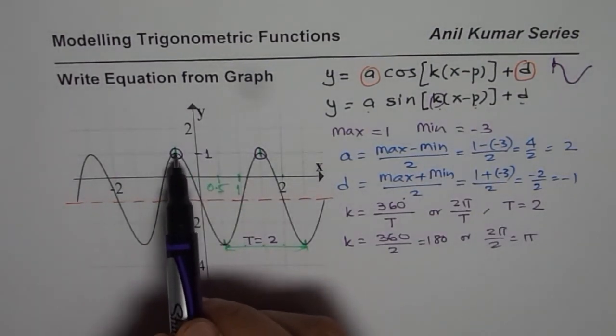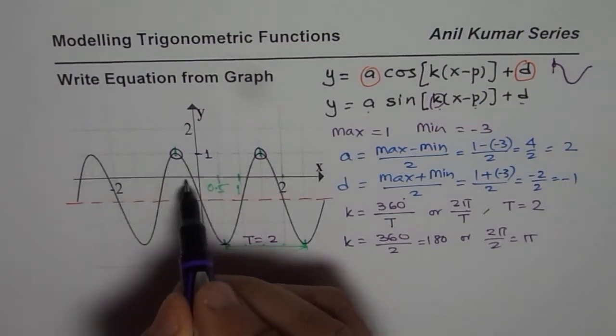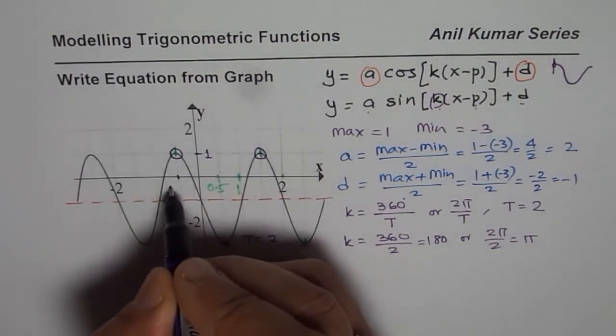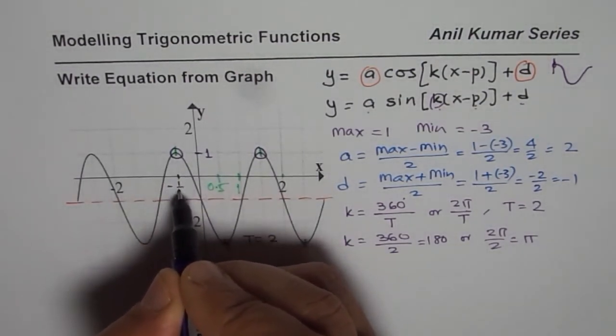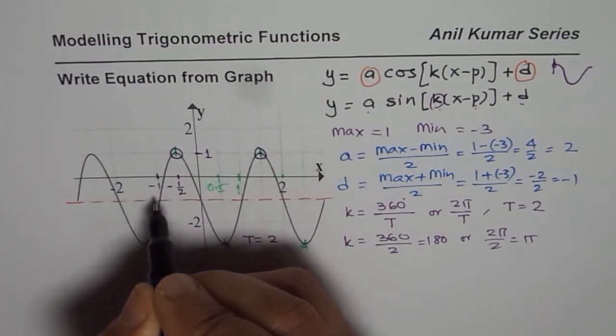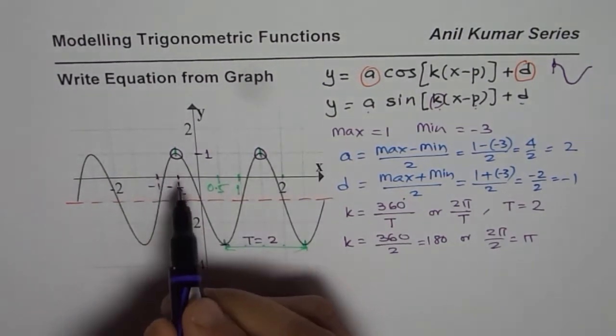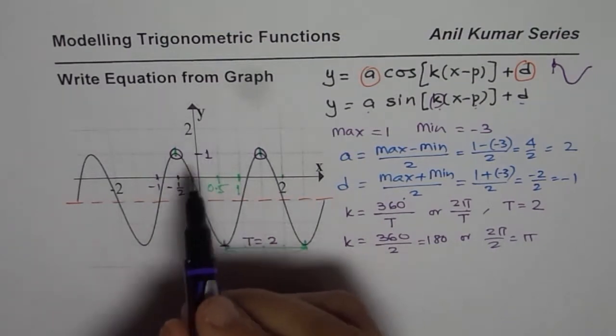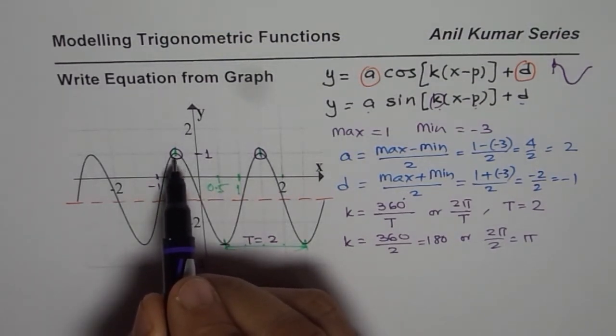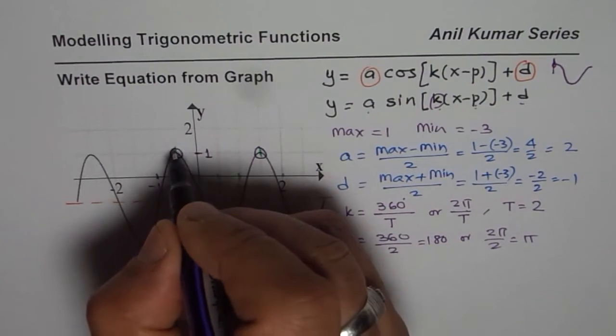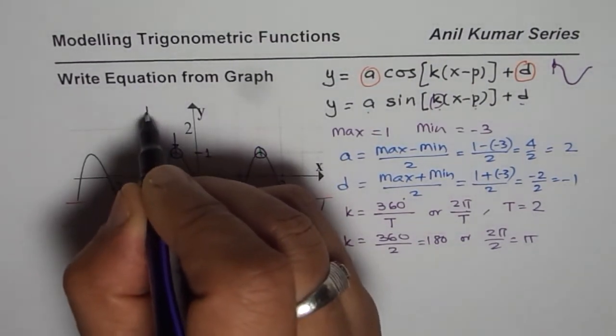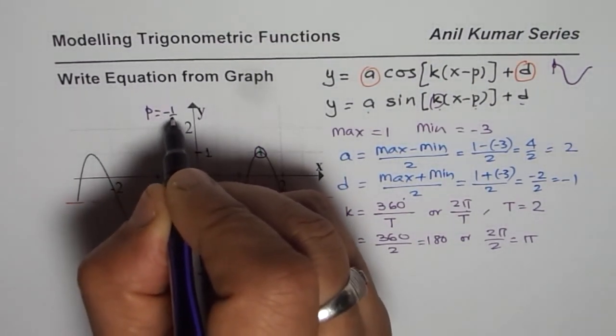So let us see, using this particular point it is how many units? It is minus half. This is 1, minus 1. So this is minus half. So that means the cosine function maximum is right there. So the wave started earlier. If you are considering this point, in that case P equals minus half.